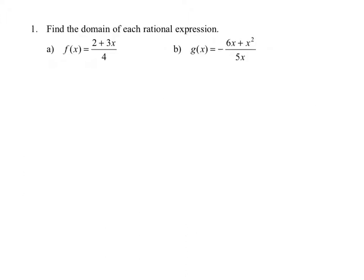To find the domain of each rational expression, you want to look at all the x values except for any x value that would make the denominator equal to zero. In the first example, f of x equals the quantity 2 plus 3x all divided by 4. In this case the domain is all real numbers, written in set notation as the set of all x such that x is a real number.